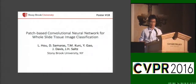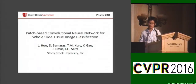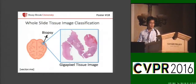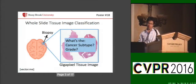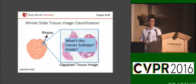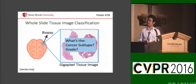Hello everyone, my name is Li Hao. Our work is patch-based CNN for whole-slide tissue image classification. Whole-slide tissue images are very high resolution microscopic images of tissue sampled from patients, sometimes cancer patients. Given some cancer tissue, we want to determine the cancer subtype or grade of these images. So it's basically an image classification problem.